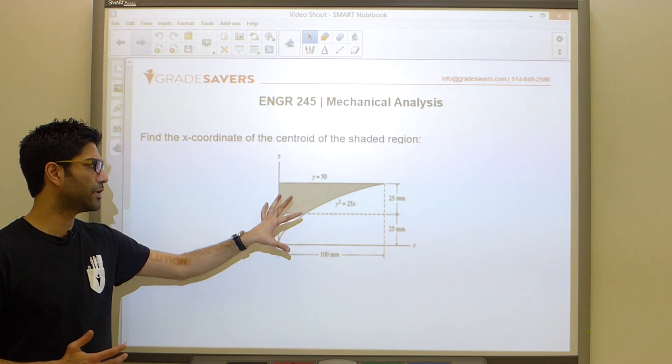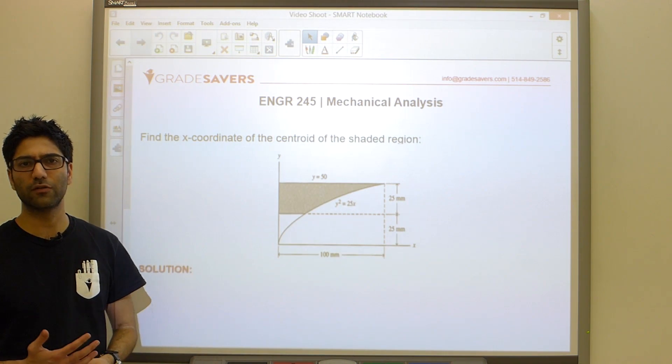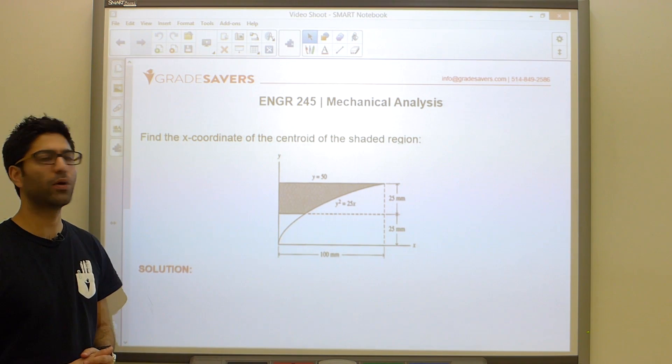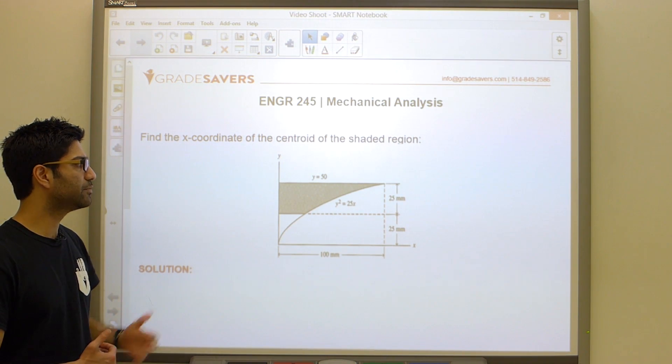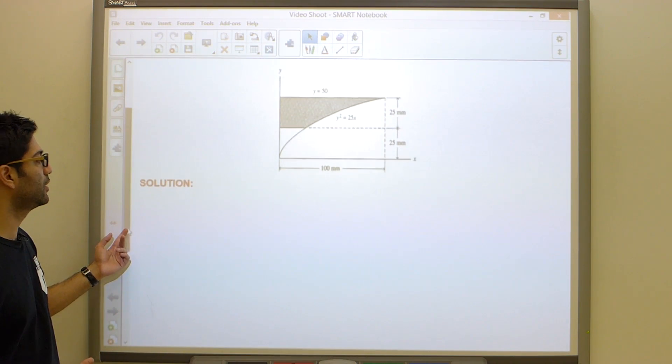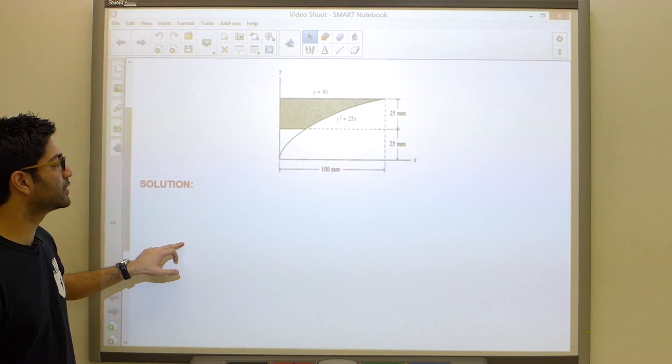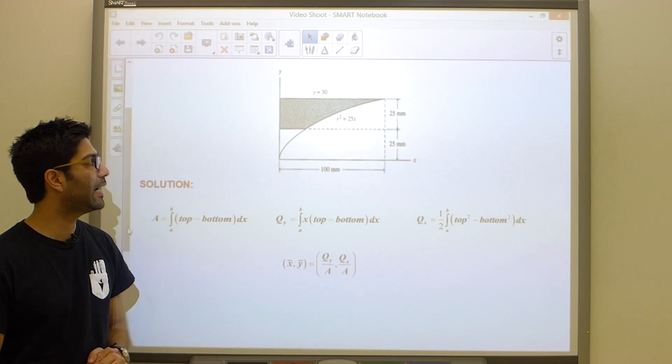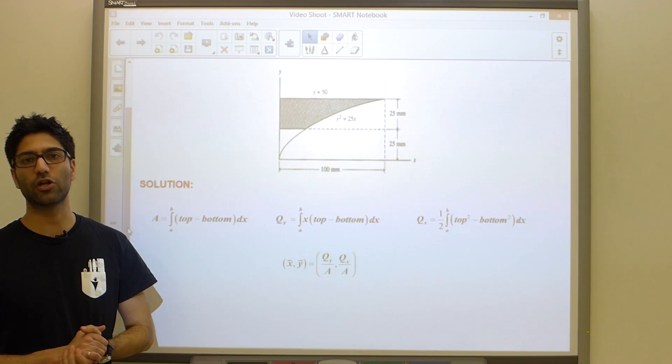We know that our shaded region is not composed of basic shapes and for that reason we're going to solve this using direct integration. In our previous problem we saw that direct integration simply amounts to using a couple of these formulas, plugging and playing and getting the job done.